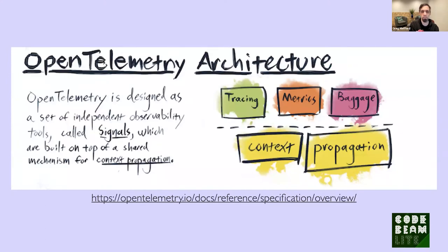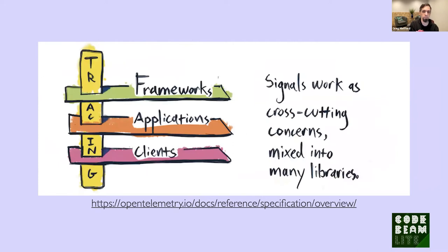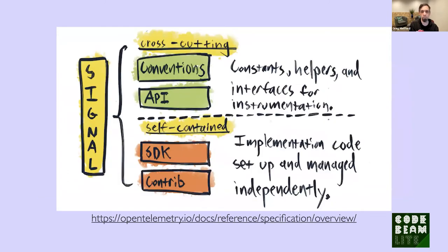OpenTelemetry is architected as a set of independent signals built on top of a platform that provides the mechanisms to propagate and collect the data from those signals. Signals work as cross-cutting concerns that need to be considered at all software layers, from libraries and frameworks to the server applications built on top, and through to the clients of those services. For each signal, there are higher-level concepts like semantic conventions and developer-facing APIs, as well as lower-level SDK implementation details to actually collect, process, and store the data.